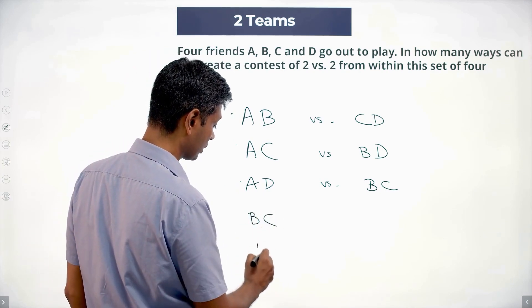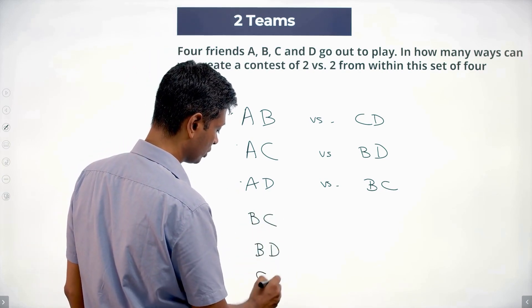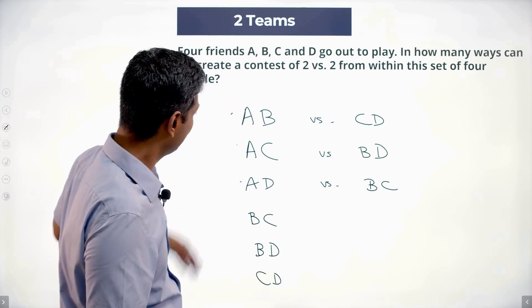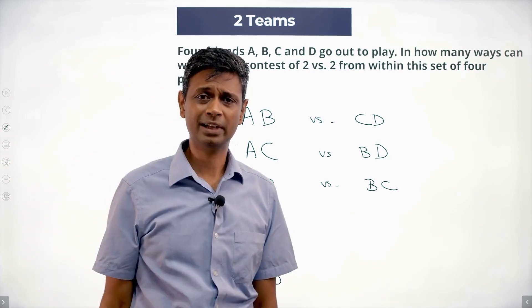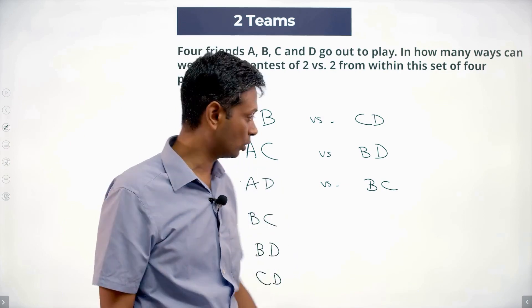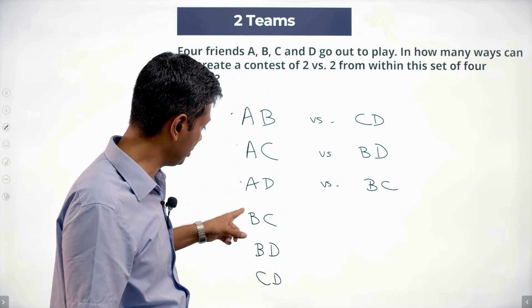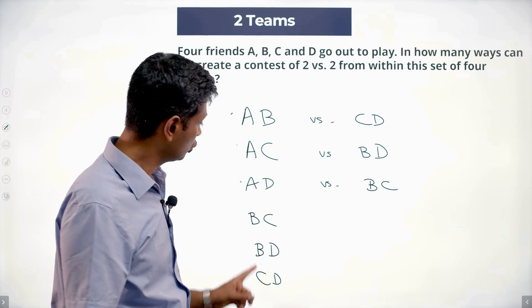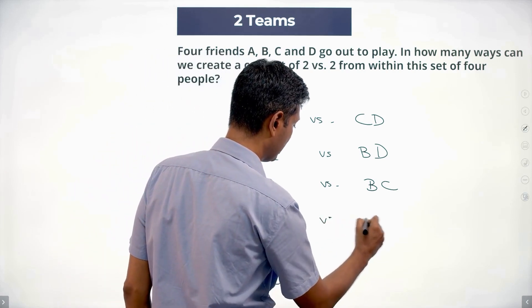I have to select two out of four. The other two automatically select themselves. In how many ways can I select two out of four? A, B, A, C, A, D, B, C, B, D, C, D. So B, C gets selected, B, C versus A, D.